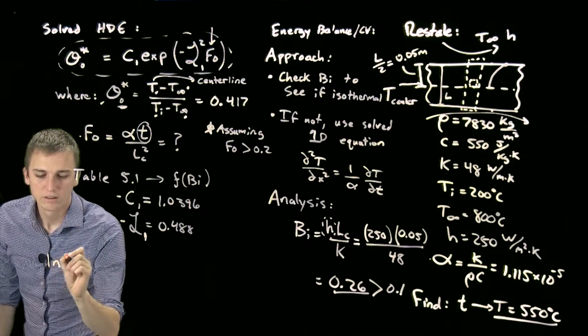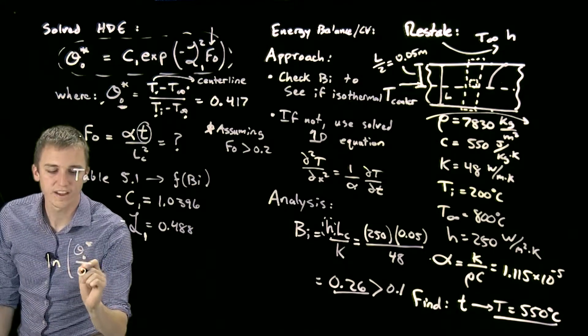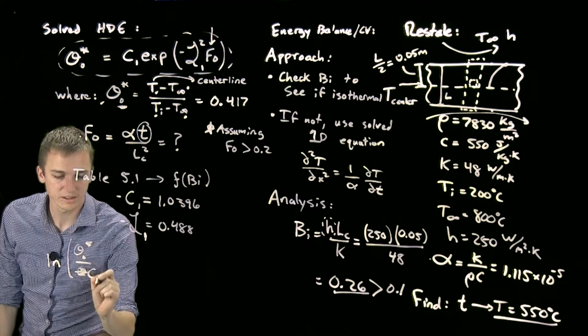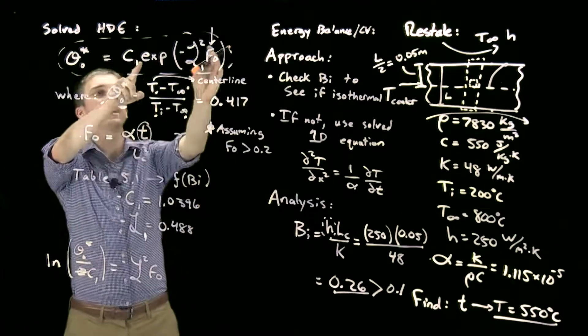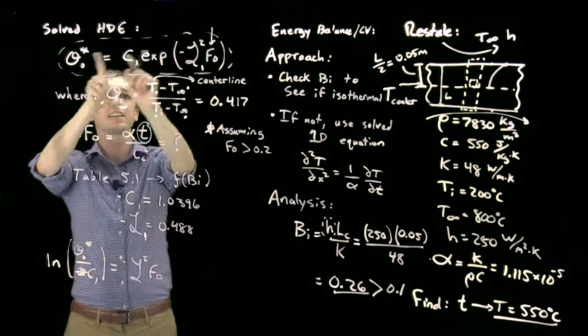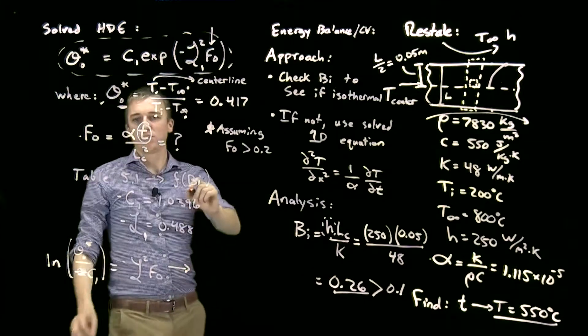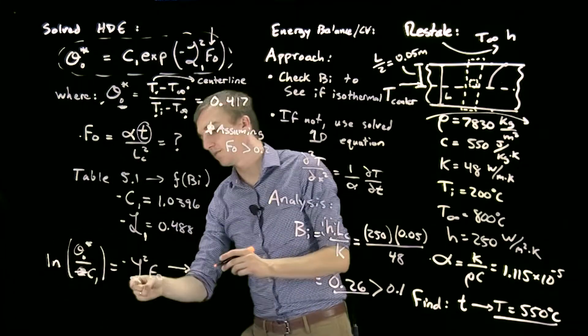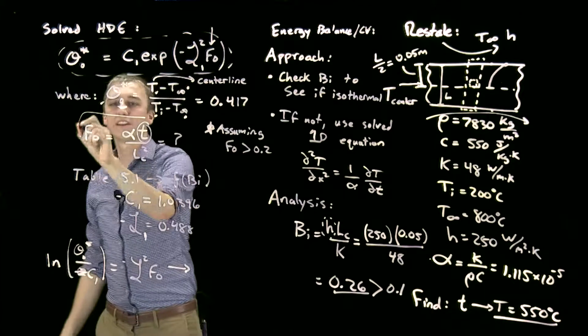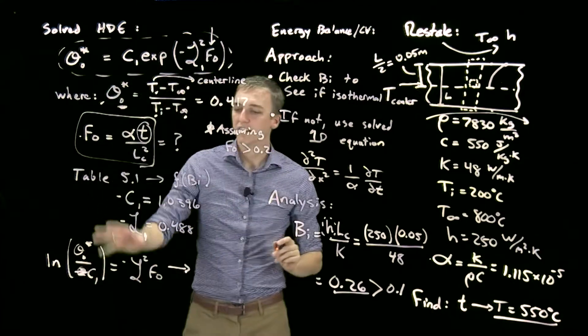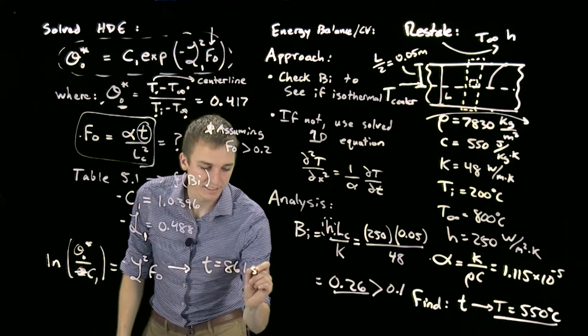We're going to rearrange a little bit and say ln(θ₀*/C₁) = -ζ² × Fo. I've just rearranged this equation by dividing by C₁ and taking the natural log of both sides. I'm not going to go through all of this math, but when we solve this equation—you see now we can do this calculation and we could even move this over here leaving just the Fourier number, which, given right here, has t inside of it. Solving this entire equation for t, we get a time of 861 seconds.